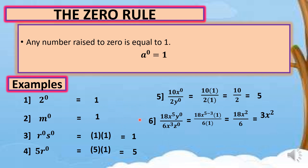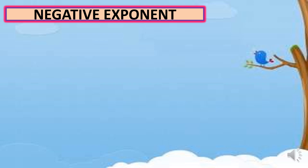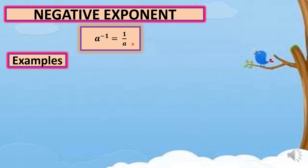That covers the zero exponent rule. Now we'll talk about negative exponents — how to simplify expressions with negative exponents. In symbol, a raised to negative 1 equals 1 over a. Example number one: x raised to negative 3. The exponent is negative, so we place x raised to 3 in the denominator to make it positive. The answer is 1 over x raised to positive 3.